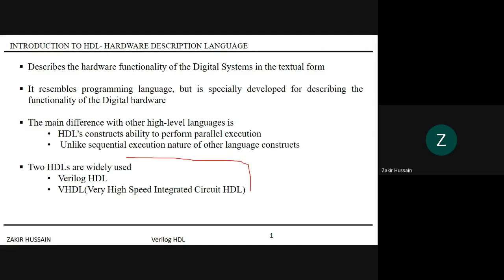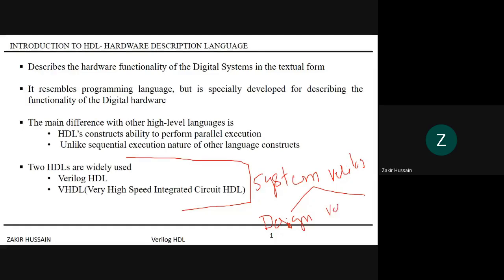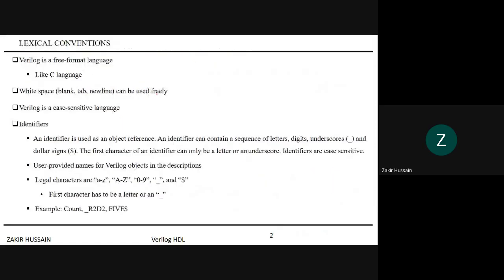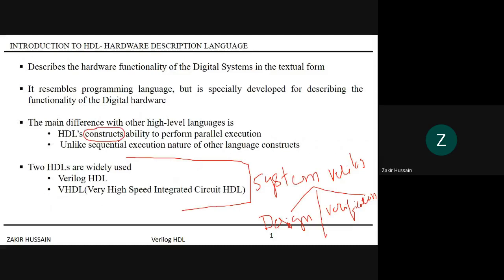Apart from Verilog HDL and VHDL, we have another language called System Verilog, which is divided into two parts: one for design and one for verification. The constructs — meaning keywords — are different for each. Those going into System Verilog must first know Verilog HDL, which will make it easier to understand System Verilog.